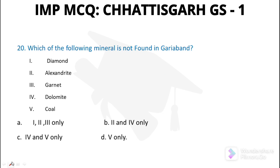Question number 20: Which of the following minerals is not found in Gariyaband? The options include Diamond, Alexanderite, Garnet, Dolomite, and Coal. Option C will be the correct answer.